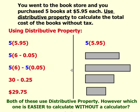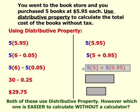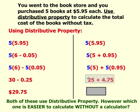Let's take a look at another possible way to do this with Distributive Property. Rewrite 5.95 as a sum: 5 plus 95 cents. When you distribute, you're going to distribute the 5: 5 times 5 plus 5 times 95 cents. 5 times 5 gives you 25, and 5 times 95 cents gives you $4.75. The sum of this is the same total as before.